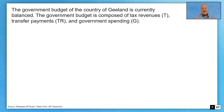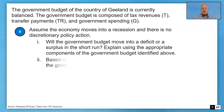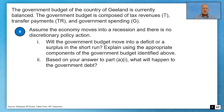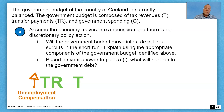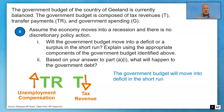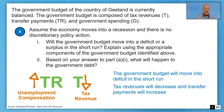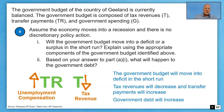Final question: the government budget of the country of G-Land is currently balanced, composed of tax revenues T, transfer payments TR, and government spending G. Part A: assume the economy moves into a recession and there is no discretionary policy action. Will the government budget move into a deficit or a surplus? Explain using the appropriate components. In a recession, output and employment fall, so transfer payments like unemployment compensation go up, while tax revenue goes down. That combination leads to a budget deficit. Government debt will also increase — debt is simply the sum of all budget balances.